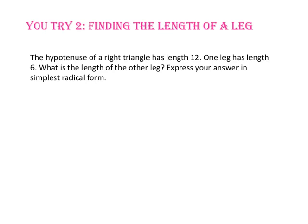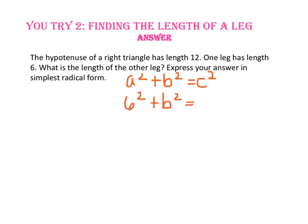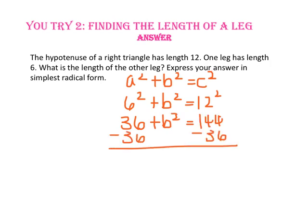Pause the video and do you try number 2. The hypotenuse of a right triangle has a length of 12 and one leg has length 6. What is the length of the other leg? Express your answer in simplest radical form. Since we are working with a right triangle and we know the length of two sides, let's start with the Pythagorean Theorem: a squared plus b squared equals c squared. Since 6 is the length of a leg, we'll substitute it in for a and we'll use 12 for c since it is the length of the hypotenuse. 6 squared is 36 and 12 squared is 144. Subtract 36 from both sides and b squared equals 108. Take the square root of both sides and b equals the square root of 108.